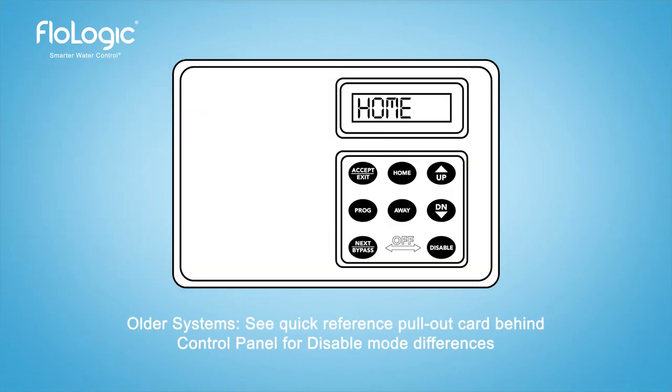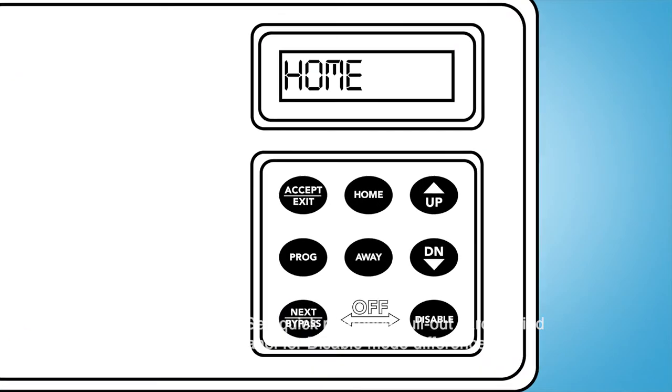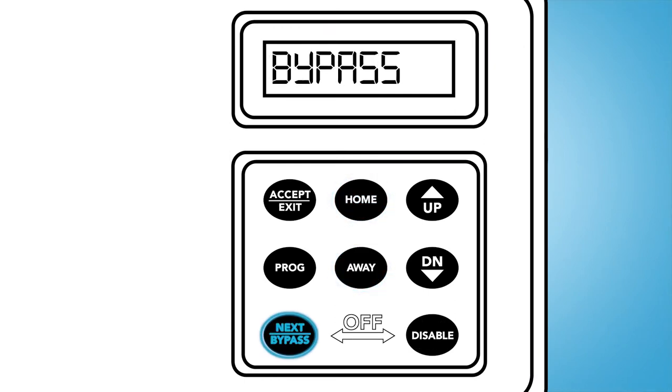The panel screen will indicate the system mode and settings. The home, away, and bypass buttons change the system modes respectively.